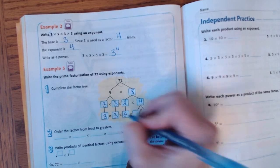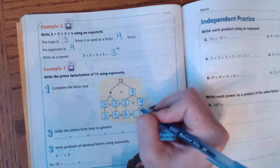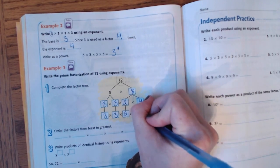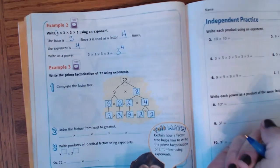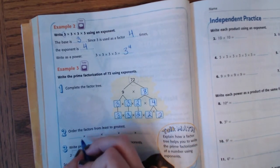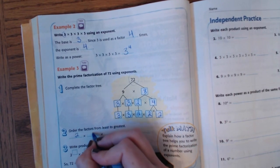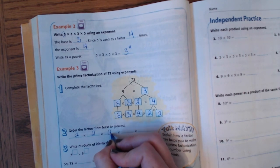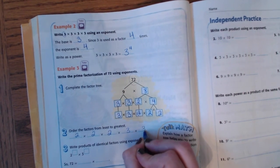Eight can be broken down into two times four. Two is already prime. I'm going to bring this on down. And four can be broken down into two times two. So, we're going to order these from least to greatest. It's going to be two times two times two times three times three.